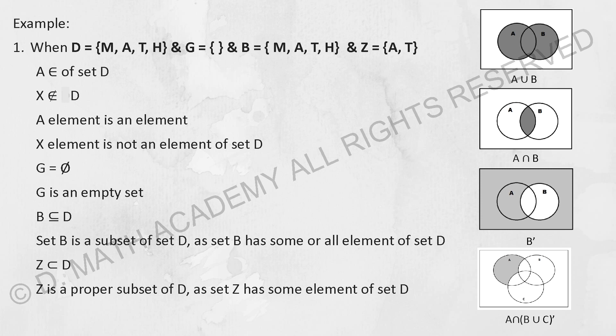So a few things that I would like to point out will be the first statement there. A is actually an element of D because it is inside the bracket of D. The next one will be X element is not an element of set D because inside the bracket there's no X there.